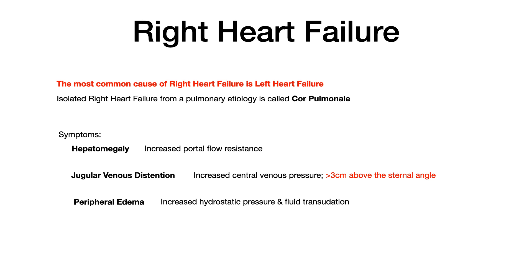Left goes first, that causes pulmonary symptoms, then the right side goes. Isolated right heart failure of a pulmonary etiology — meaning it's due to a problem inherent to the lungs and has nothing to do with the heart itself — is termed cor pulmonale. Symptoms of right-sided heart failure are going to be systemic. On the left side, symptoms were shortness of breath and pulmonary issues because blood was backing up into the pulmonary system.